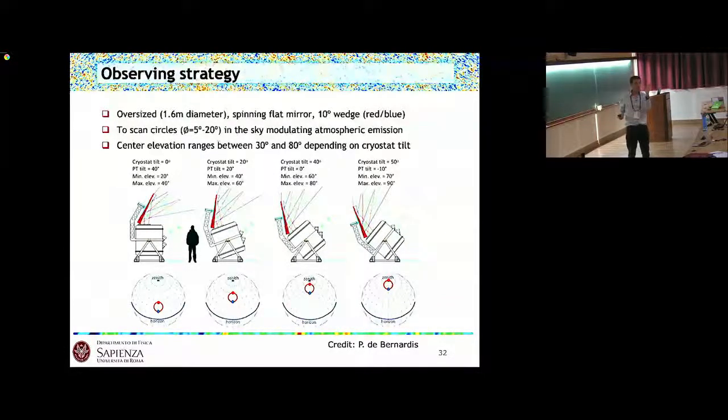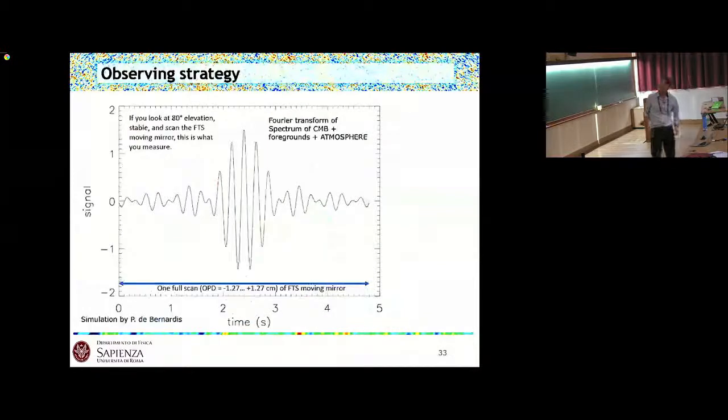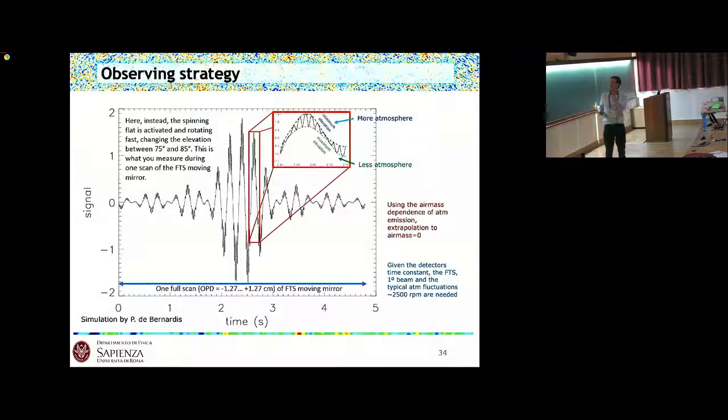The observing strategy is critical because we want to get rid of the atmosphere. The plan is to have a flat mirror slightly wedged and spinning. Basically, spinning this mirror we will make circles like that in the sky, so we will observe the sky and the atmosphere at different elevations. Those are possible different configurations tilting at different elevations. If we make a spectrum at constant elevation of the CMB plus foreground plus atmosphere, we get something like that at 80 degrees elevation. If we move a bit up and a bit down, very fast, spinning this telescope, then this spectrum will see those wiggles that are coming up from the fact that we are moving between minimum elevation where we will have more atmosphere and maximum elevation where we will have less atmosphere.